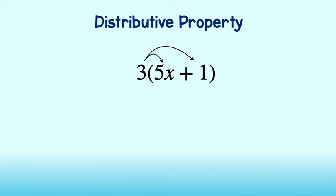3 times 5x is equal to 15x plus 3 times 1 is equal to 3. Great! We have just simplified this expression using the distributive property.